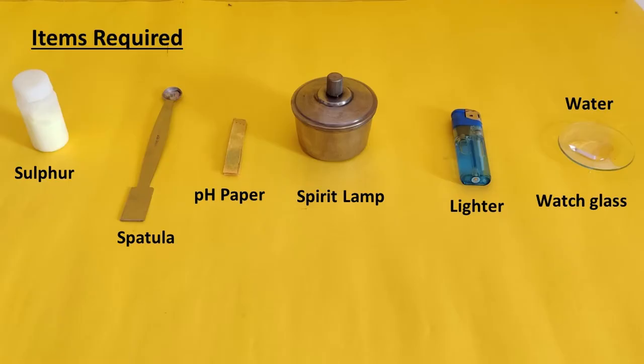To test the pH of sulfur dioxide, we will need sulfur, a spatula, pH paper, spirit lamp filled with surgical spirit, a lighter or matches, and watch glass with some water.